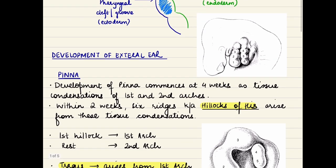Now coming to the development of the ear. The ear is divided into 3 parts: external, middle, and inner ear. The external ear comprises the pinna and the external auditory canal. Pinna development starts at around 4 weeks of age as tissue condensations of the first and second arches. Within 2 further weeks, that is around 6 weeks, 6 ridges known as hillocks of His develop from these tissue condensations.